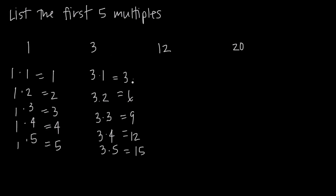And I know that 3, 6, 9, 12, and 15 will all divide evenly by 3. In fact, I can say 3 divided by 1 is 3, 6 divided by 2 is 3, 9 divided by 3 is 3, 12 divided by 4 is 3, and 15 divided by 5 is 3. Or I could say 3 divided by 3 gives me 1, 6 divided by 3 gives me 2, 9 divided by 3 gives me 3, 12 divided by 3 gives me 4, and 15 divided by 3 gives me 5.